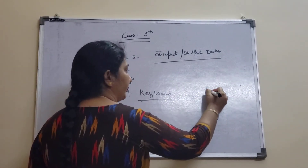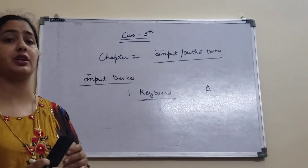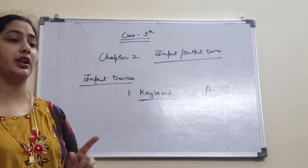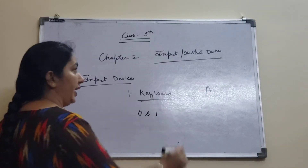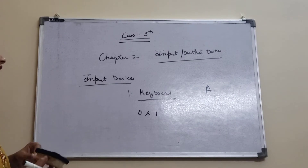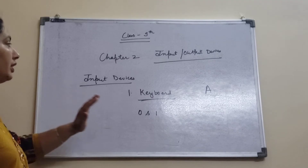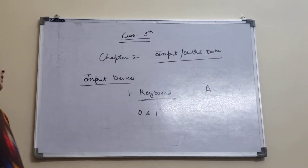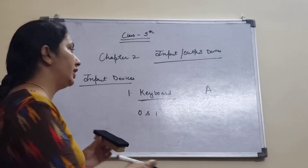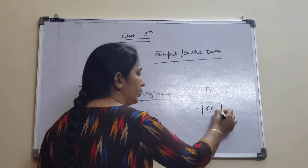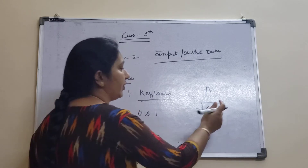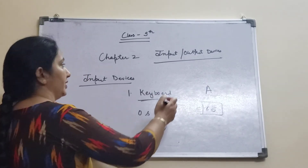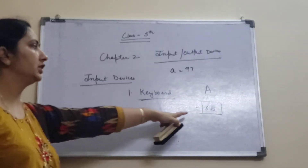Now, when you enter any instruction through the keyboard — suppose you are entering capital A — how does it actually process? As I told you earlier, whatever instructions you give to the computer, it accepts them only in the form of 0s and 1s. So when you enter capital A, the computer will not understand the letter directly. For each and every key there is one code — like for capital A the code is 65, for capital B it is 66, and for small a it is 97.